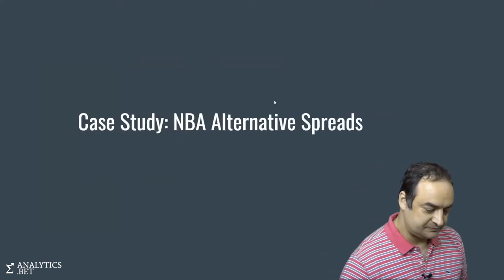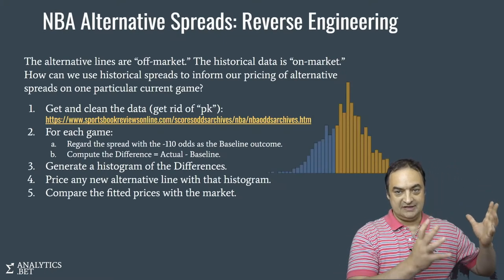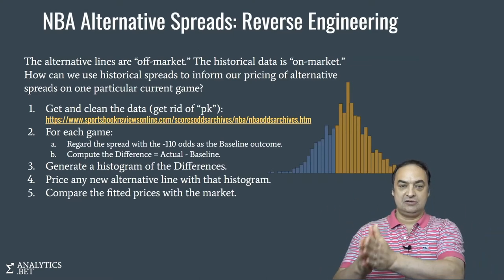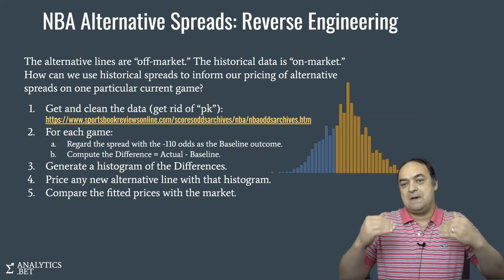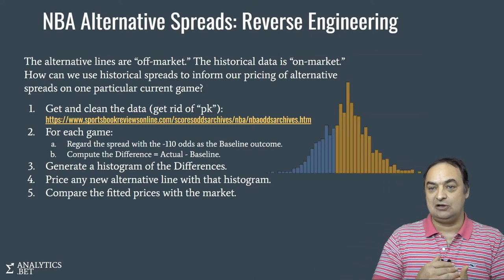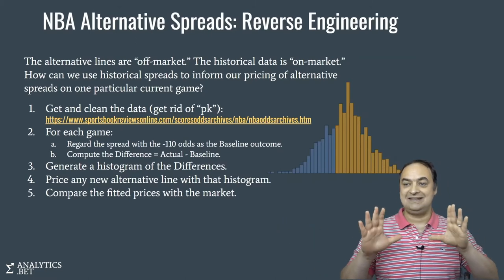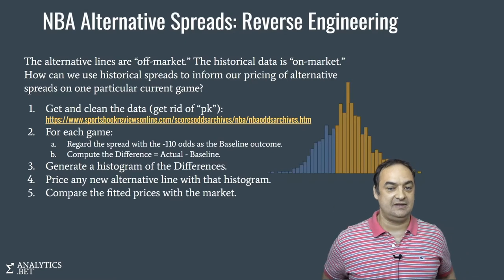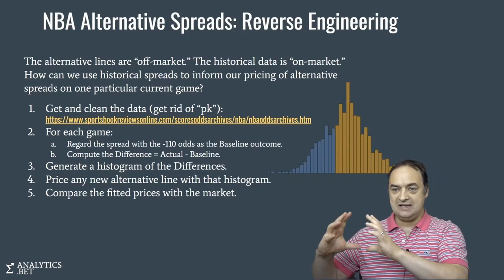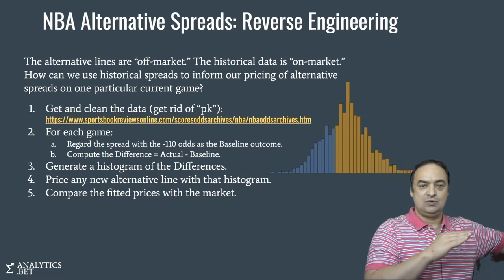So how are we going to figure out NBA alternative spreads? The main issue is, we'd like to basically use historical data to try to understand one particular live game. The problem is that all of our historical data is, in a sense, you could call it on market. We have the spread that actually existed for that game, the closing lines, and we know what actually happened. We don't have a database, a historical database of alternative lines for every game. We only have the closing spreads, the actual closing lines and the actuals.